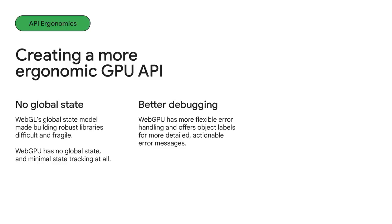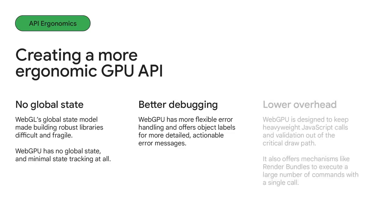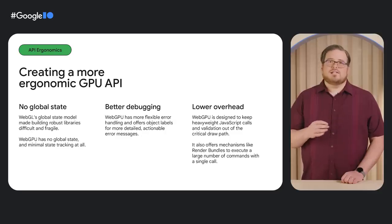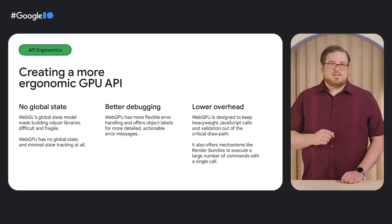We heard that debugging WebGL applications was a pain, so WebGPU includes a more flexible error handling mechanism that doesn't tank your performance. And we've gone out of our way to ensure that every message you get back from the API is easy to understand and actionable. We also saw that frequently the overhead of making too many JavaScript calls was a bottleneck for complex WebGL applications. As a result, the WebGPU API is less chatty, so you can accomplish more with fewer function calls. We focus on performing heavyweight validation upfront, keeping the critical draw loop as lean as possible. And we offer new APIs like render bundles, which allow you to record large numbers of drawing commands in advance and replay them with a single call.